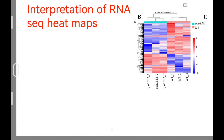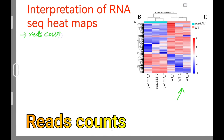Welcome to another video tutorial. In this video I will show you how we can interpret RNA-seq heat maps. Here we can see a heat map generated through RNA-seq data. First we should know which data can be used for RNA-seq. There are three types of data: number one is read counts data.